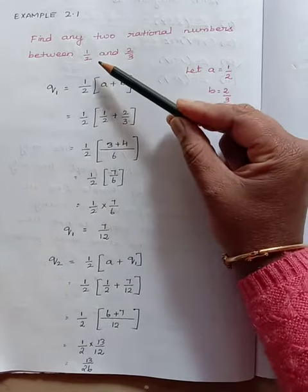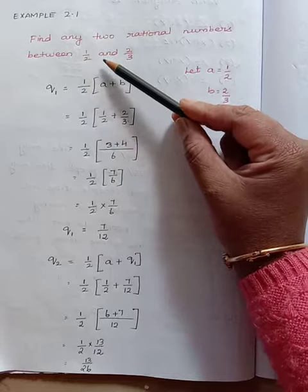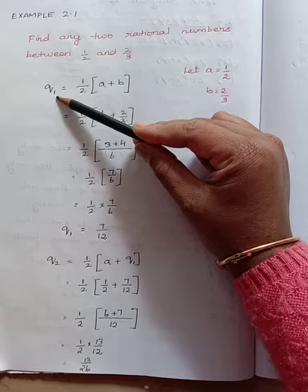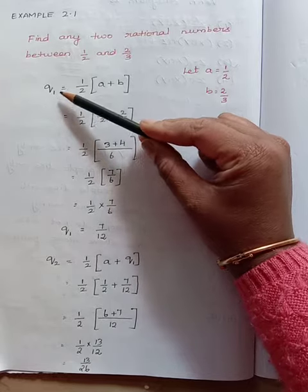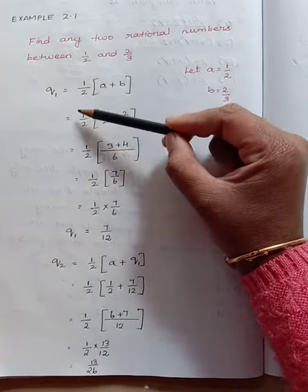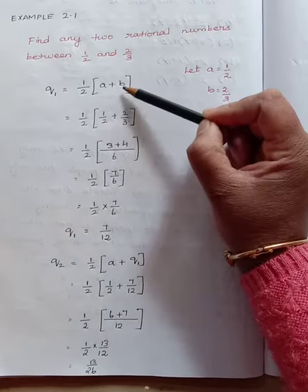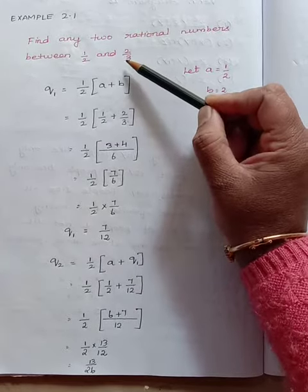To find the rational numbers between 1/2 and 2/3, let us find the average of these two numbers. That is Q1, the first rational number Q1 equals half into A plus B. So the A value is 1/2 and B value is 2/3.